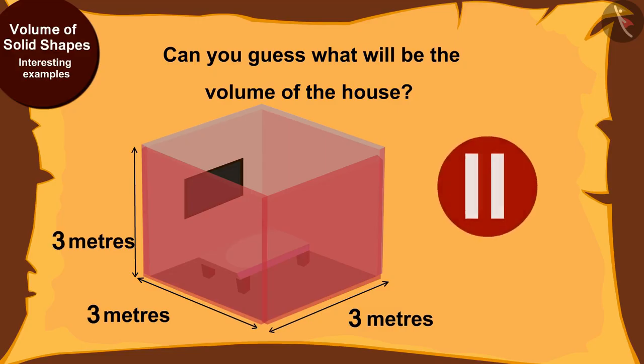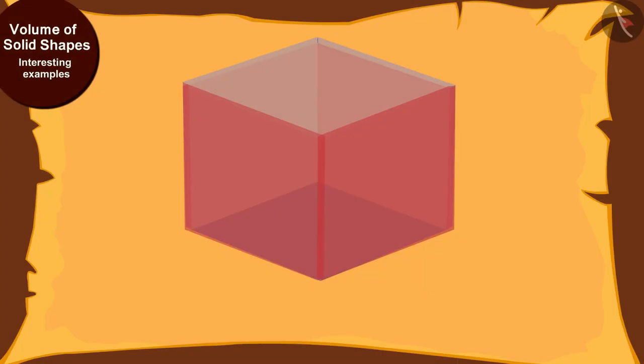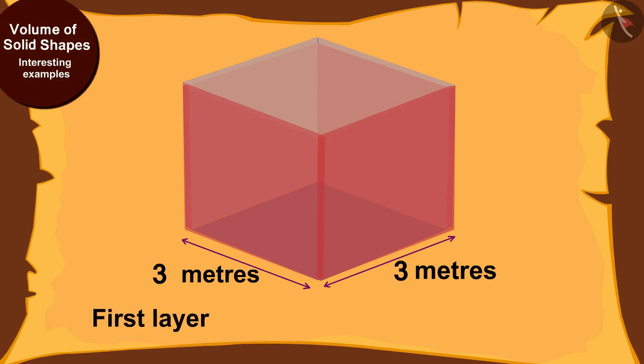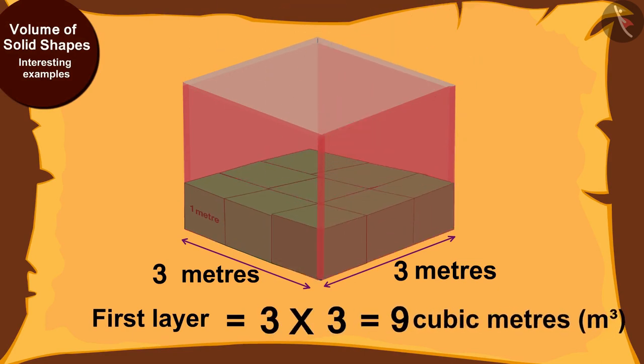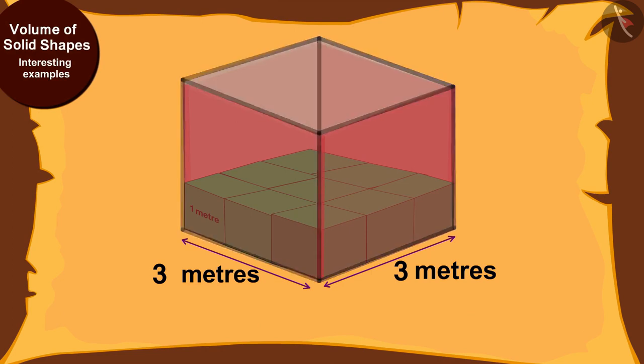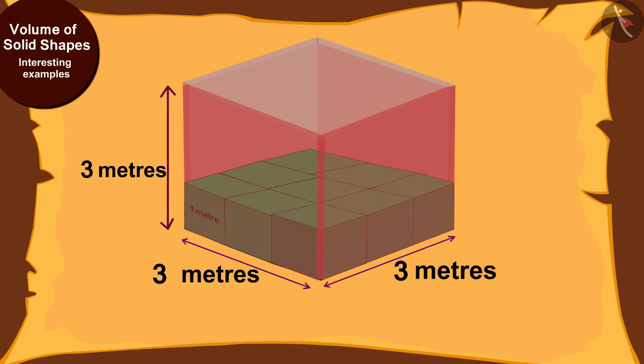The cube shaped house has a length of 3 meters. This means that the first layer of the house will have 3 times 3, 9 meter cubes. And because the house is cube shaped, its height will also be 3 meters.